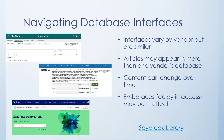There are also things called embargoes that publishers put on some articles — basically a delay in access. It may appear that we should have something, but then you can't get to it. Please contact the library if you run into that situation. We may be able to get it through interlibrary loan, so don't feel you can't get something just because it's not quickly showing up in your search.